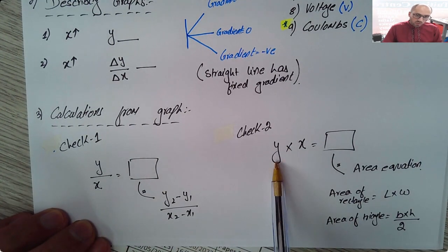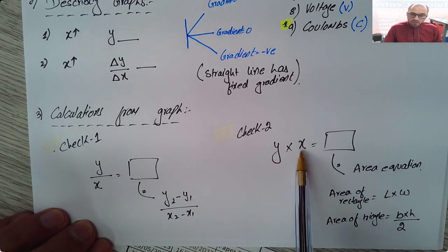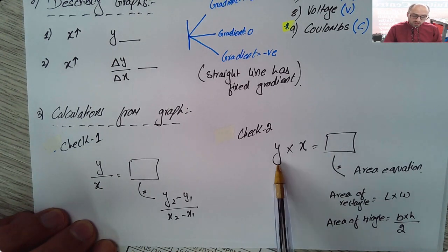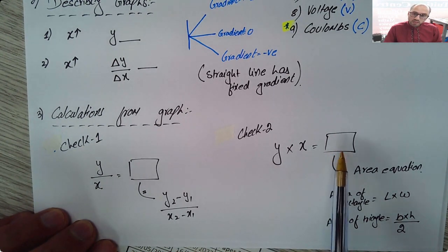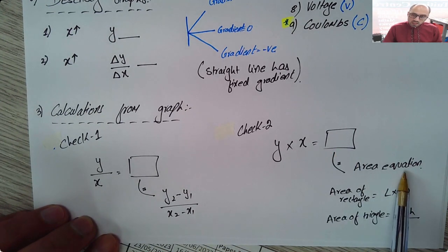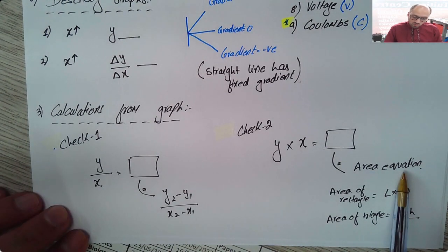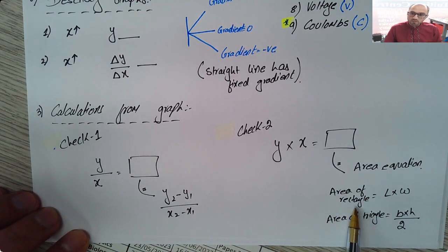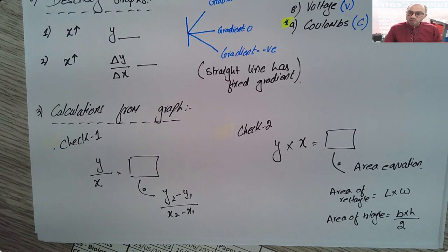You will do the second check. You will multiply wherever the variable on y-axis is with the variable on x-axis. Once you multiply them, whatever quantity you get here you will work out this quantity by using area equation. Now there are two equations that you must all know. One is how to work out the area of triangle. And the other one is how to work out the area of triangle.